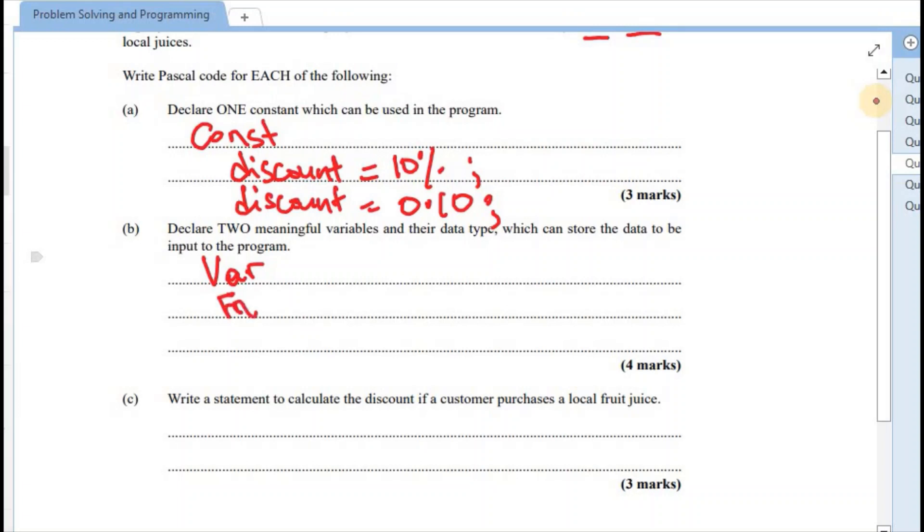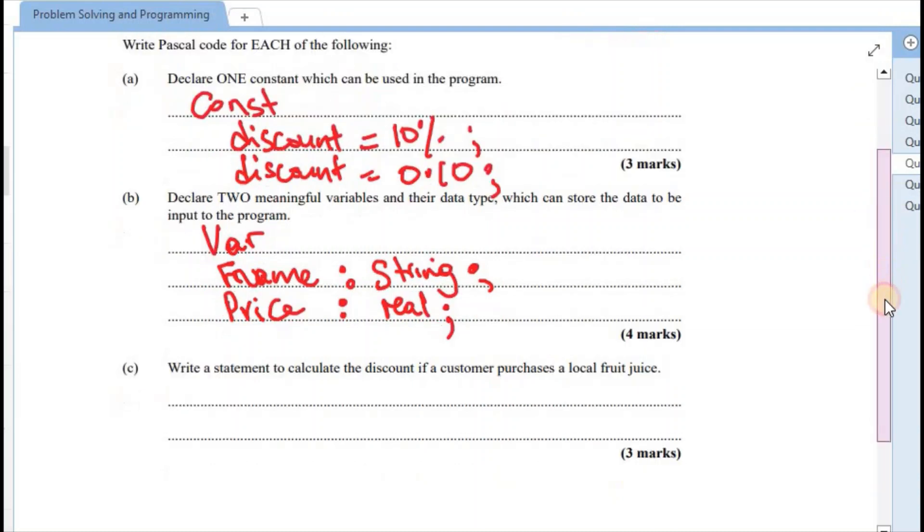So we say fname representing the person's full name. So fname colon followed by the data type. Names are normally referred to as string for the data type. And we end the line with a semicolon. Second one, we say the price of the local juice. So that again, variable name followed by a colon. And then assigning the data type, which would be either an integer or a real. And in my case, I'm going to use real as a data type. And we end the line with a semicolon.